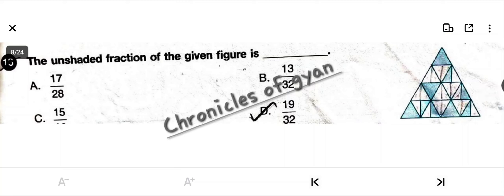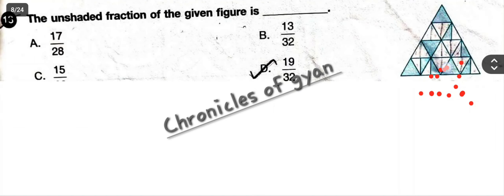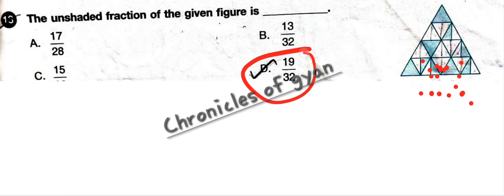Question 13: The unshaded fraction of the given figure is blank. First count the total parts — counting all: 1, 2, 3... up to 32. So the denominator is 32. Now count the unshaded parts: 1, 2, 3... up to 19. So 19 parts are unshaded. The answer is option D: 19 by 32.